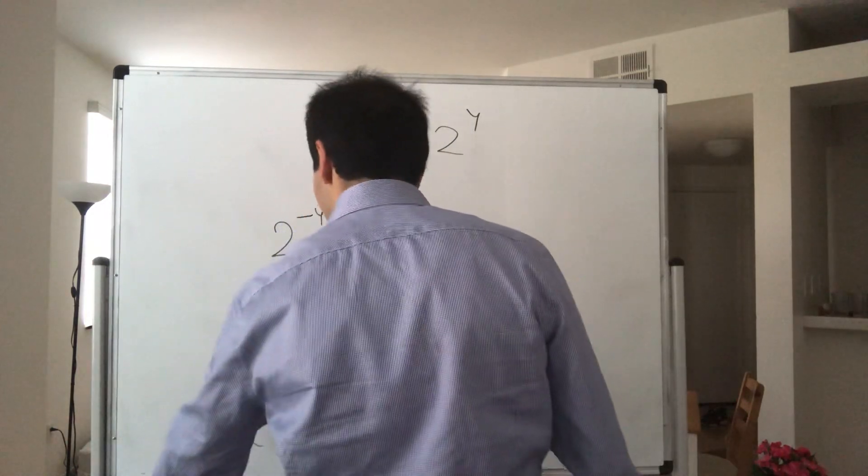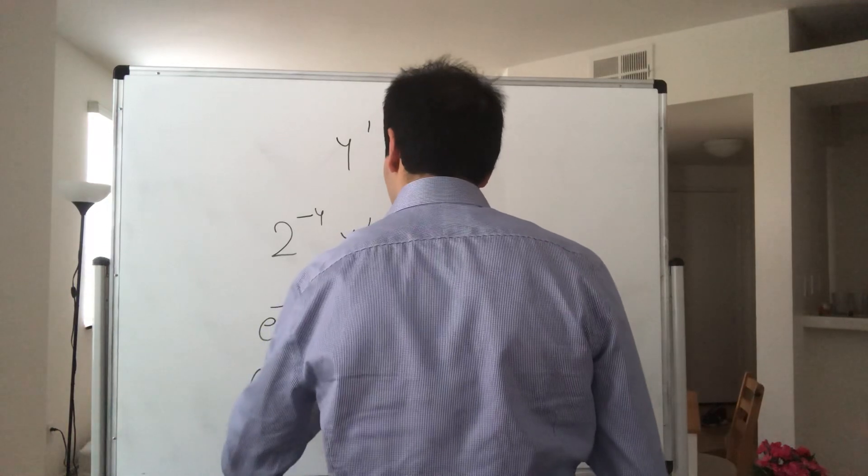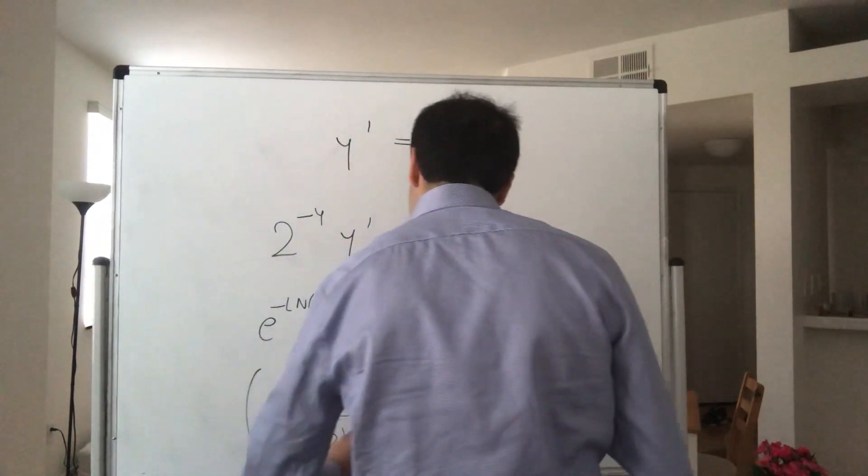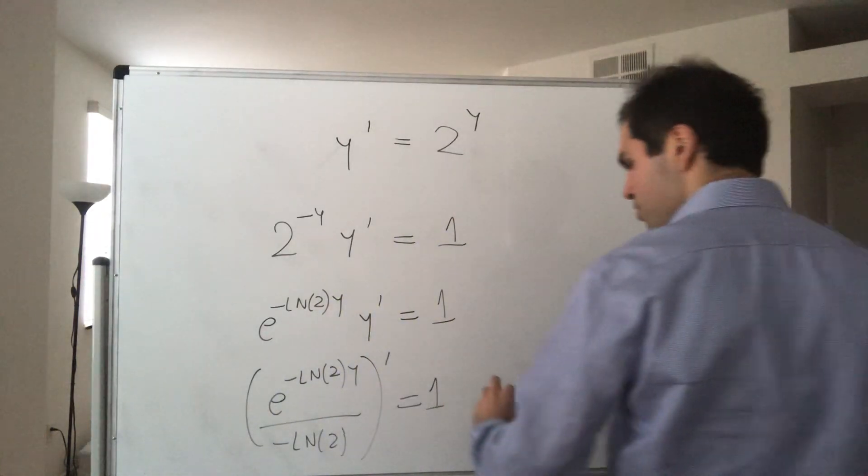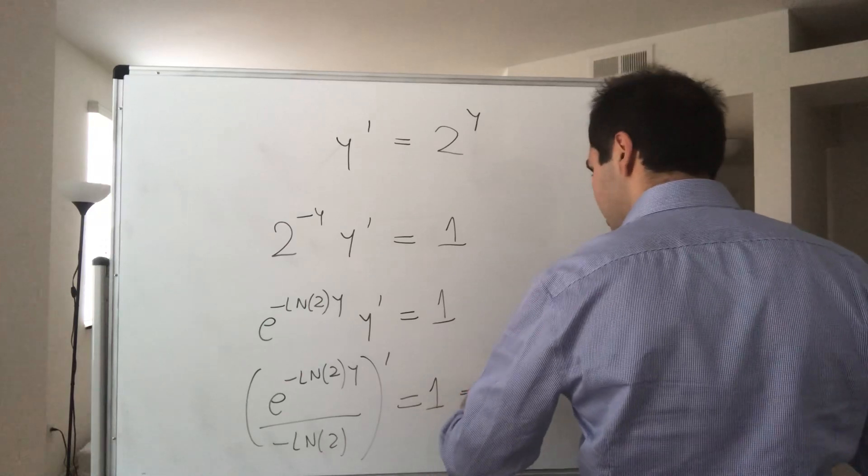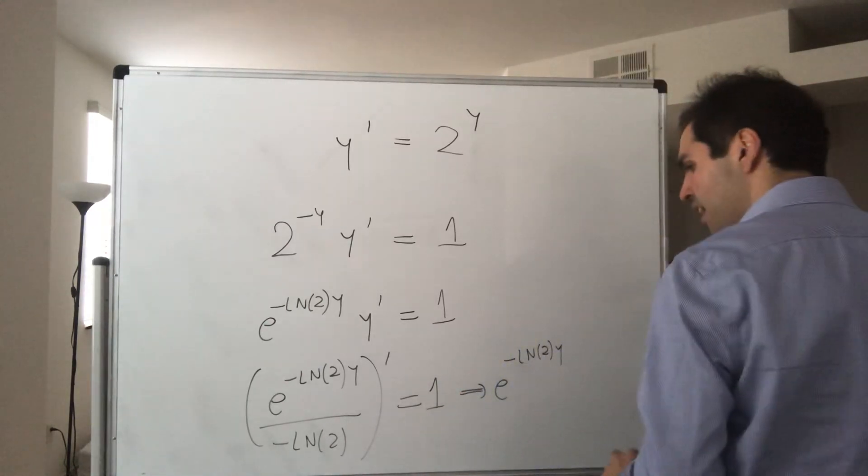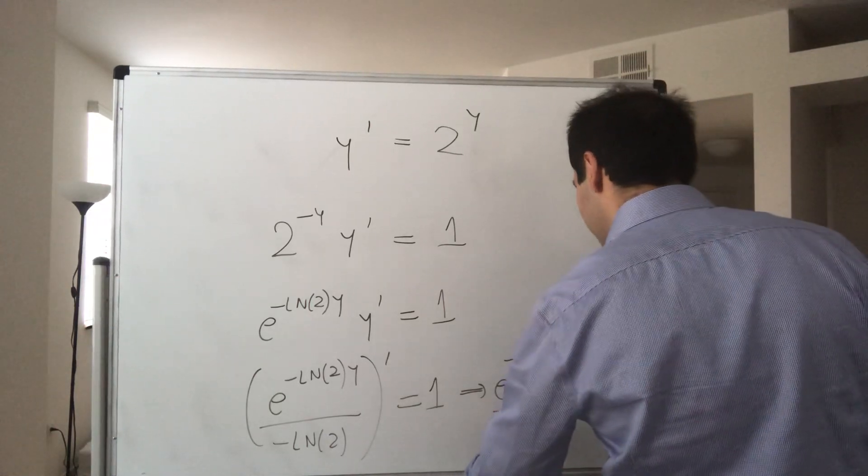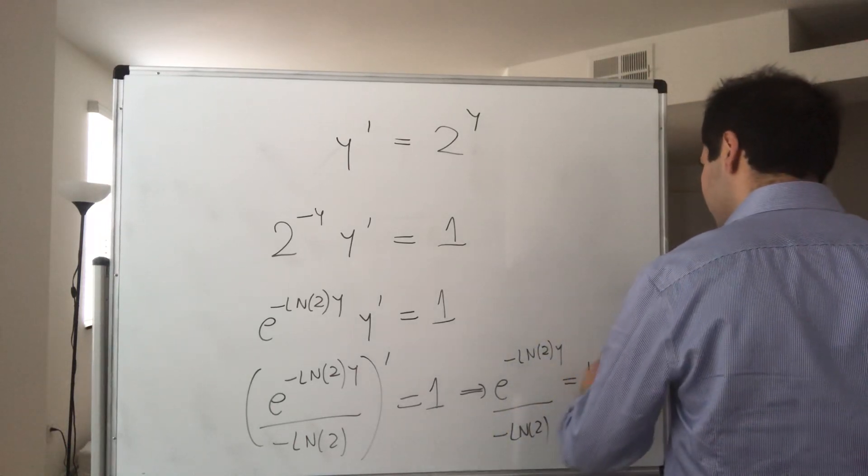Now using the reverse chain rule, that's e to the minus ln of two y over minus ln of two, prime equals one. In other words, e to the minus ln of two y equals, after integrating, minus ln of two times t plus a constant.